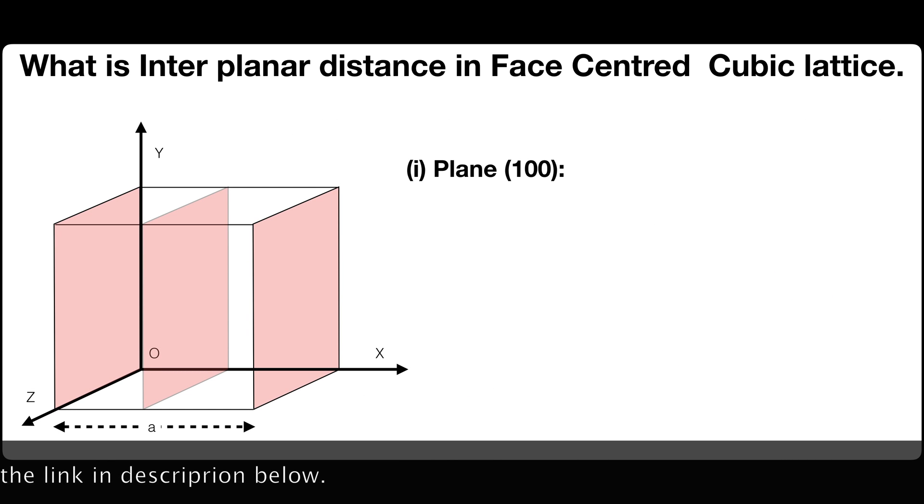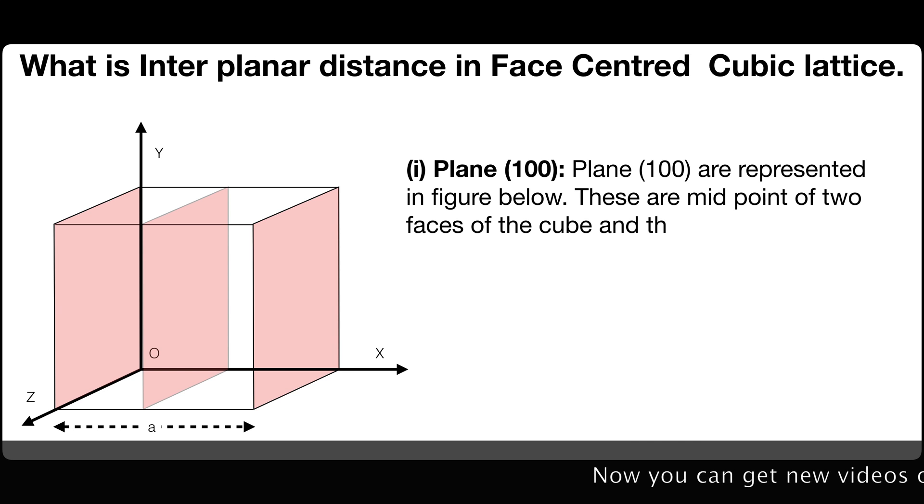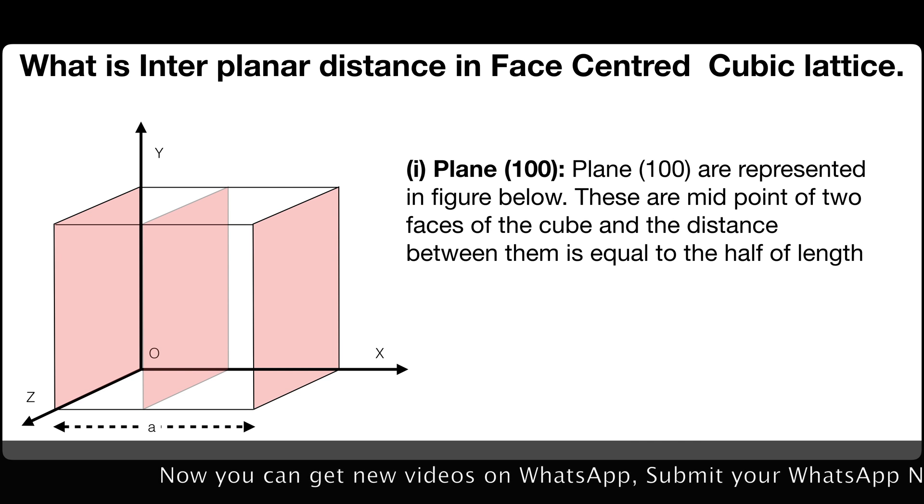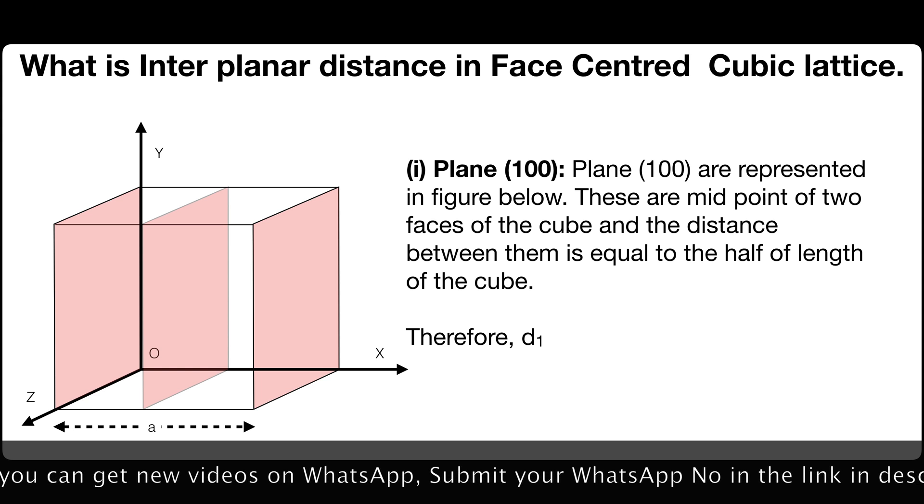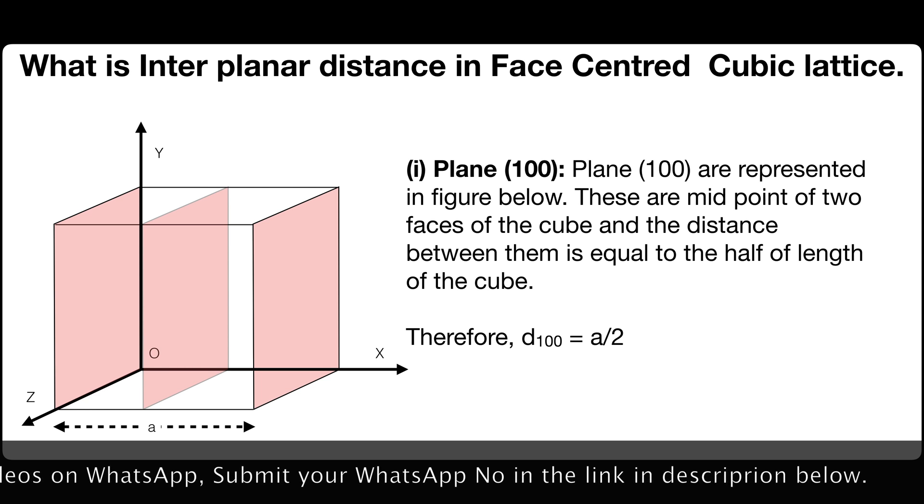First plane 100. Plane 100 are represented in figure below. These are the midpoint of two faces of the cube and the distance between them is equal to the half of the length of the cube. Therefore d100 equals a by 2.